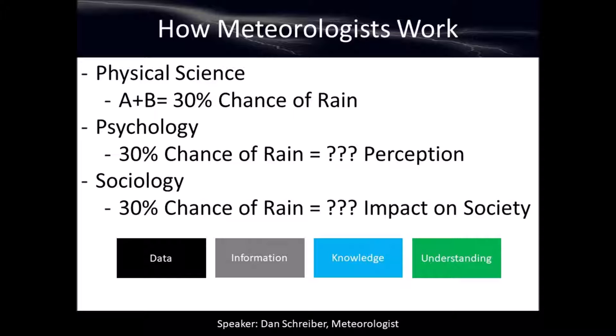All weather is just the atmosphere trying to equalize everything — that's all it is. So now that we understand that, how do meteorologists work? How do the people who study weather do their jobs? We know the atmosphere is never going to completely neutralize itself — there's always going to be a difference somewhere. So how do we figure out what's going to happen next?